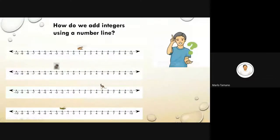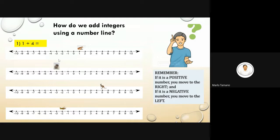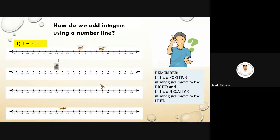How do we add integers using a number line? Number one: 1 plus 4. What is the answer? It's five. So from one, move to the right four units. Our marker stopped at five. Therefore, the answer is five.